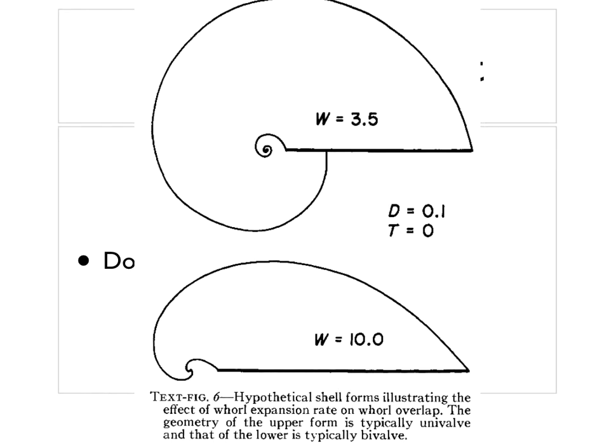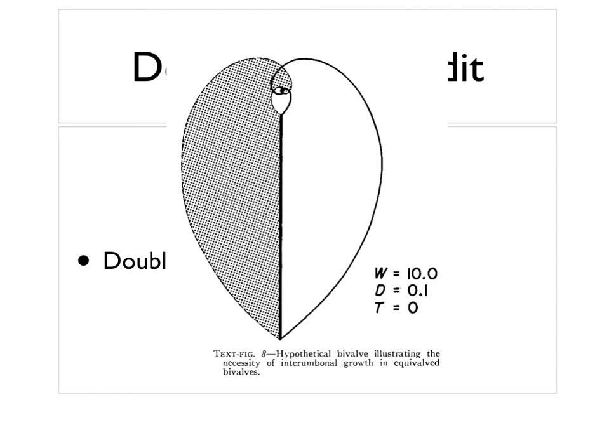This is basically the same thing showing, again, whorl expansion rate and overlap. In the terms of a bivalve, you can't have too much whorl here because of course you need to have the two shells closing together. So he also thought about these issues as well.